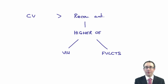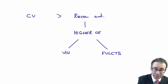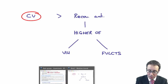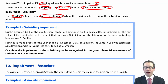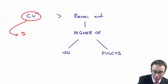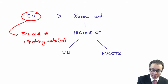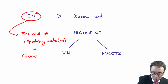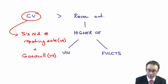The impairment is the difference between the carrying value and the recoverable amount. In the exam, you'll be given the value in use and the fair value less cost to sell. What you have to consider is the carrying value. If we're looking at the subsidiary, the subsidiary is your cash generating unit, whereby the carrying value is that of the subsidiary plus any goodwill. The carrying value of the subsidiary is S's net assets at the reporting date — taken from working two — plus the value of any goodwill from working three.